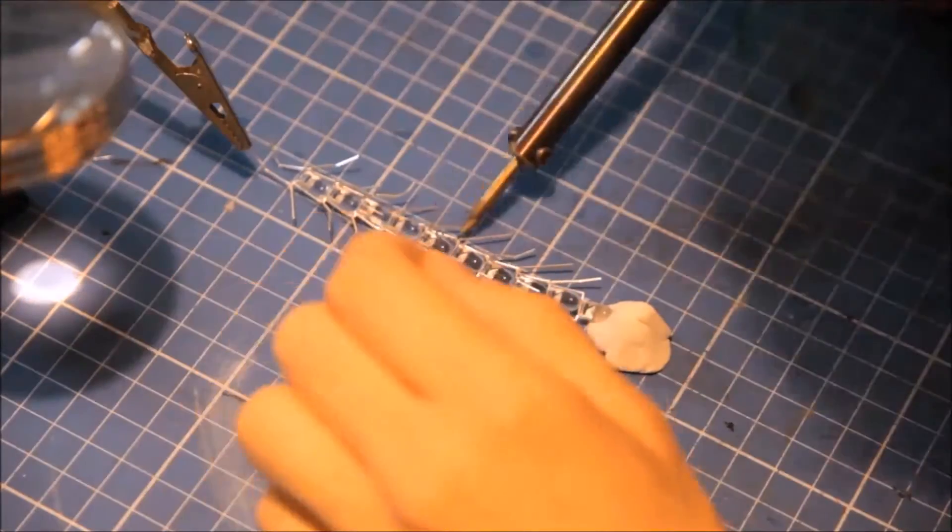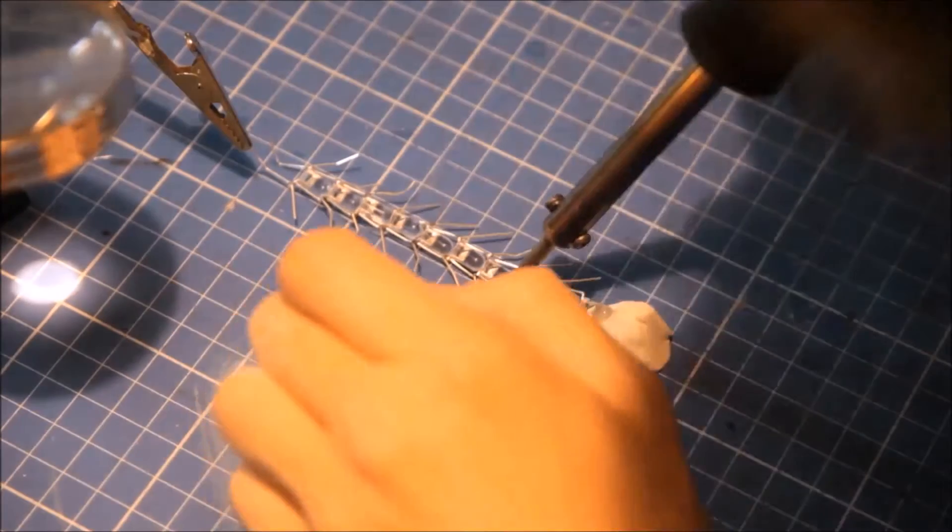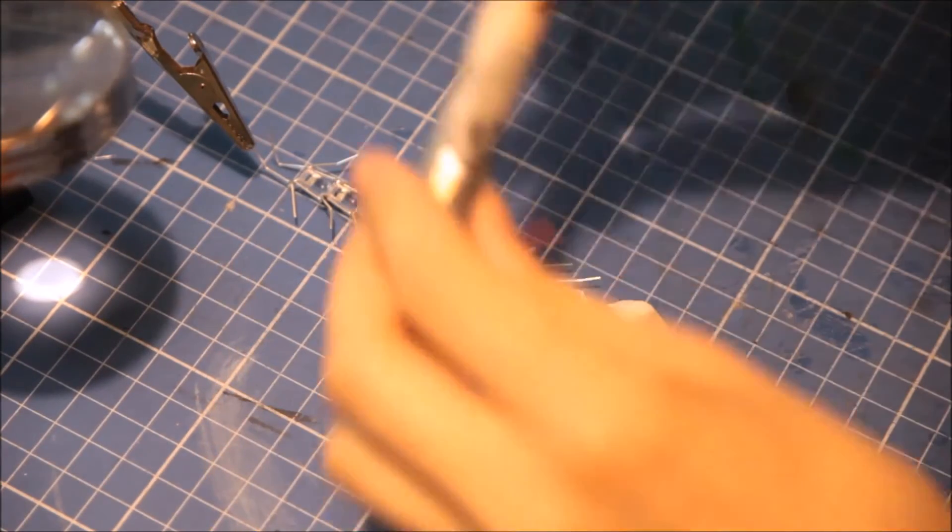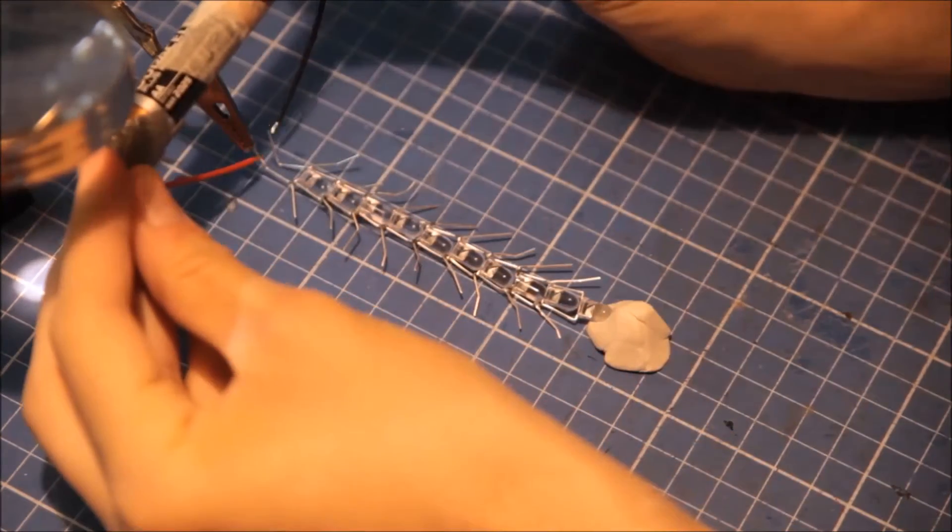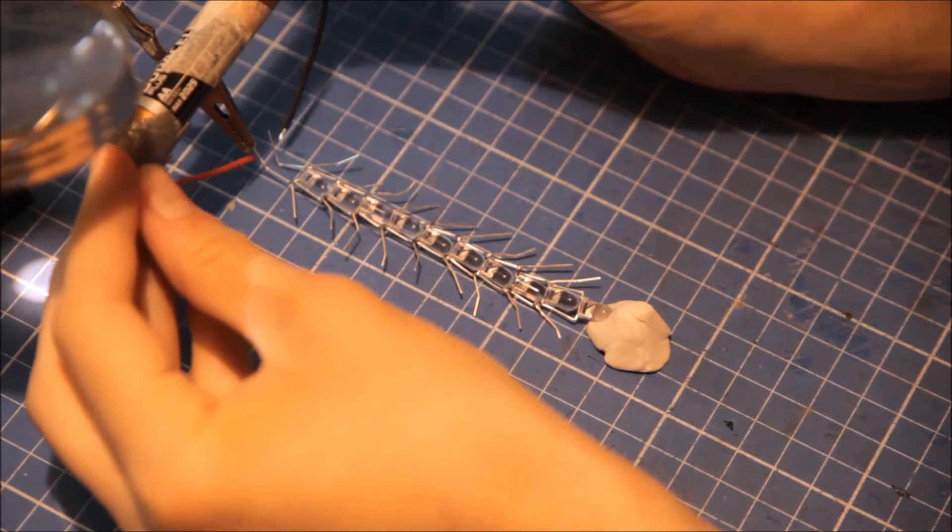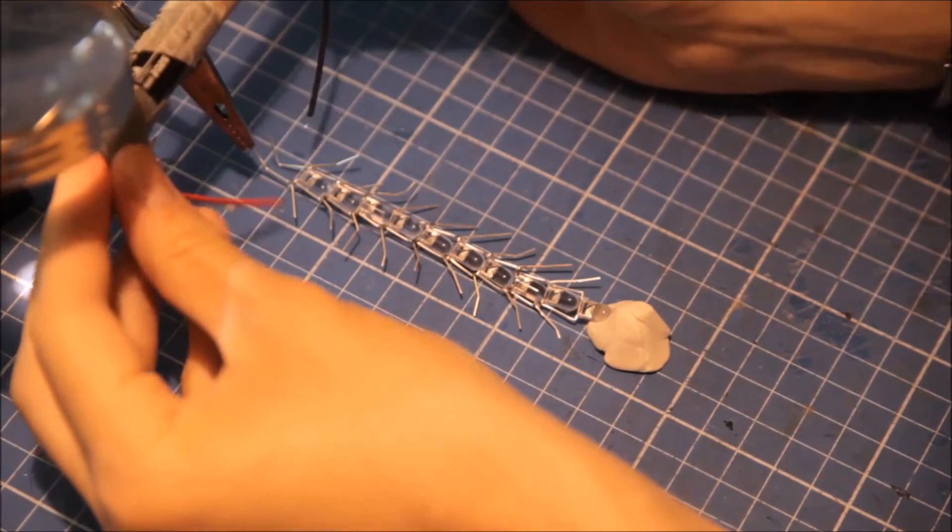Next solder the LEDs together to ensure a good electrical connection and then repeat this 10 times over to get 10 strings of LEDs, and test every step of the way once you start connecting LEDs together.